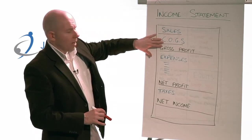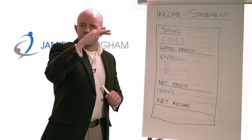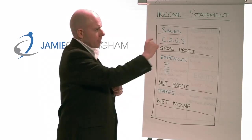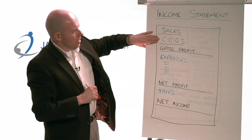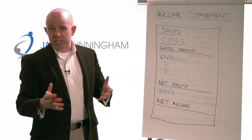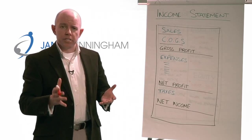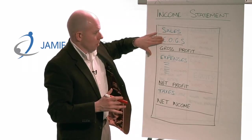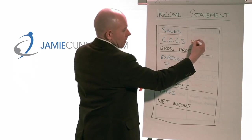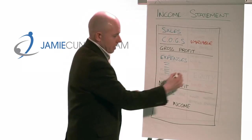Looking at your income statement, you've got your revenue or sales line at the top, and underneath that you might have several different categories. Essentially you've got a sales line, and then you've got cost of goods sold. Cost of goods sold is an expense or cost that is directly relative to the sales you make. It's important to distinguish between cost of goods sold and expenses — another way to think about it is that cost of goods sold are variable expenses, while regular expenses are fixed.